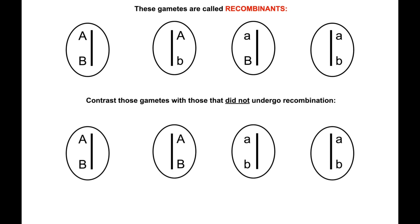Contrast those gametes with the ones that did not undergo recombination in the previous example. You can observe in the bottom row that we have two gametes identical on the left-hand side and two gametes identical on the right-hand side, a total of two different types of gametes.